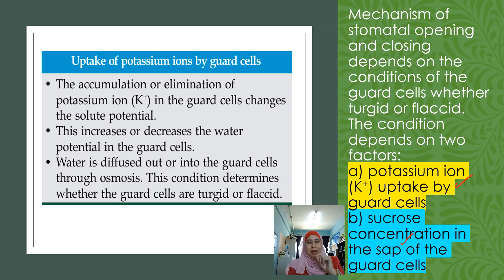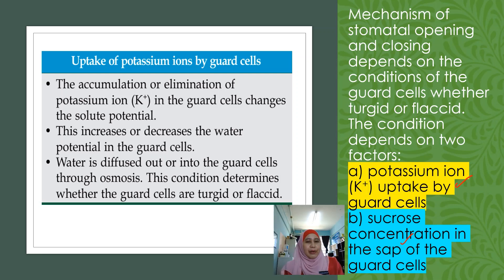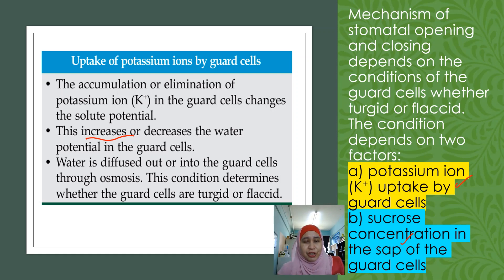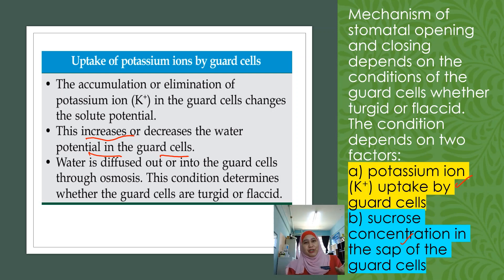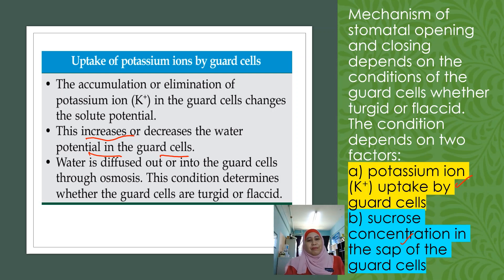We are going to look at these one by one. The first is the uptake of potassium ions by the guard cell. The accumulation or elimination of potassium ions in the guard cell will change the solute potential. When there is a change in the solute potential, it will either increase or decrease the water potential in the guard cell. Water then either diffuses in or diffuses out from the guard cell via osmosis — whether the guard cell becomes turgid, meaning water diffused into it, or flaccid, meaning water diffused out.